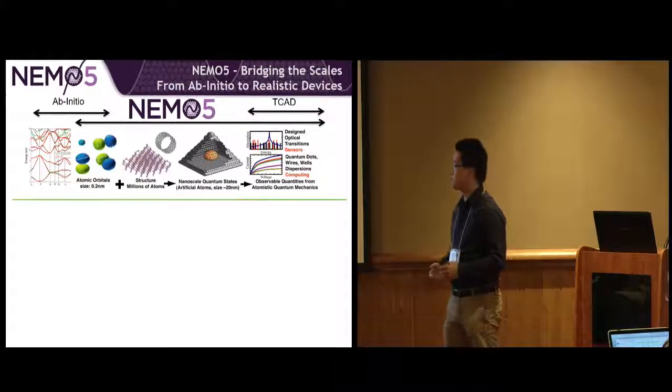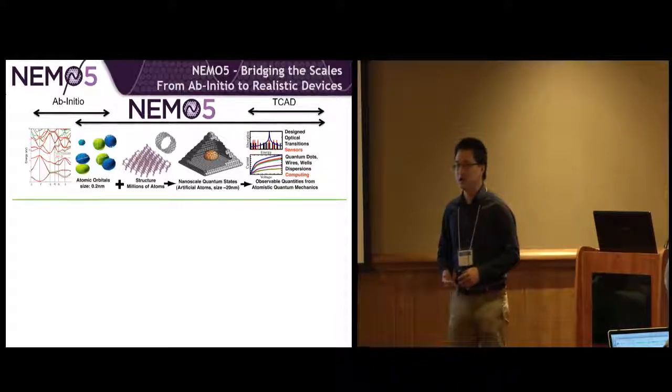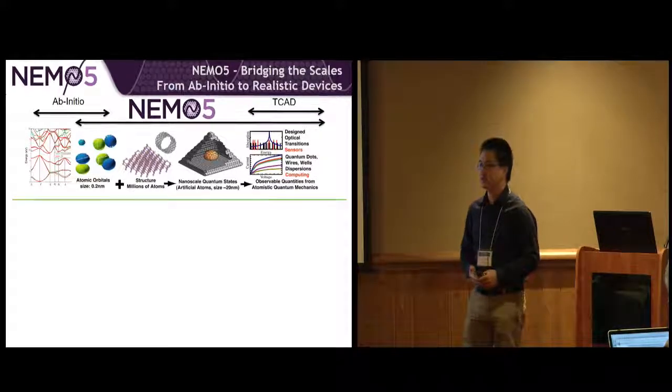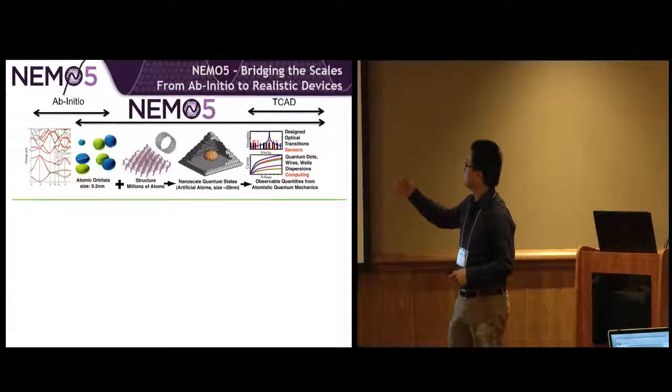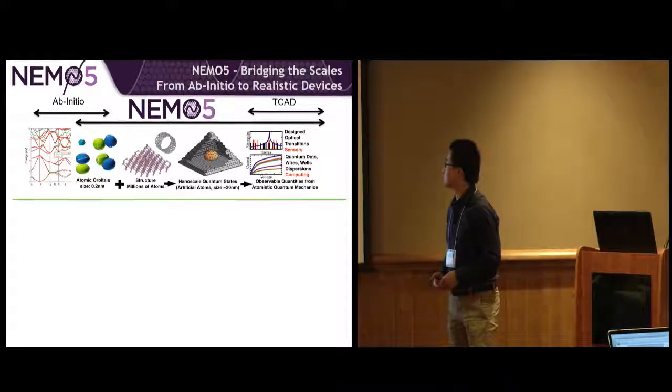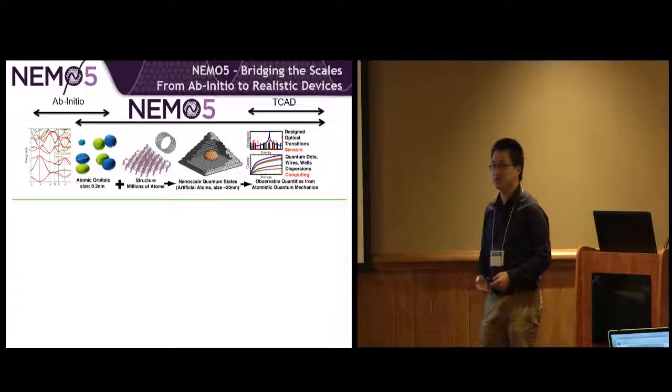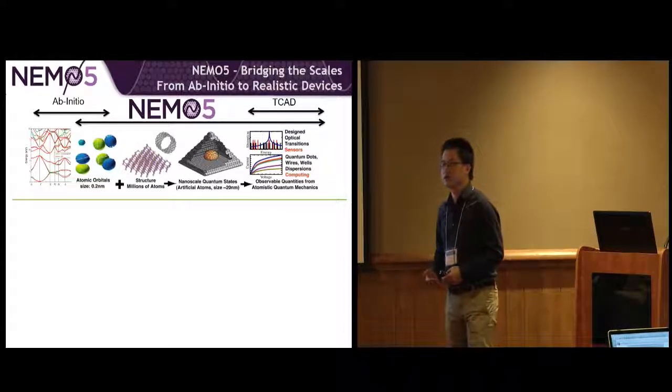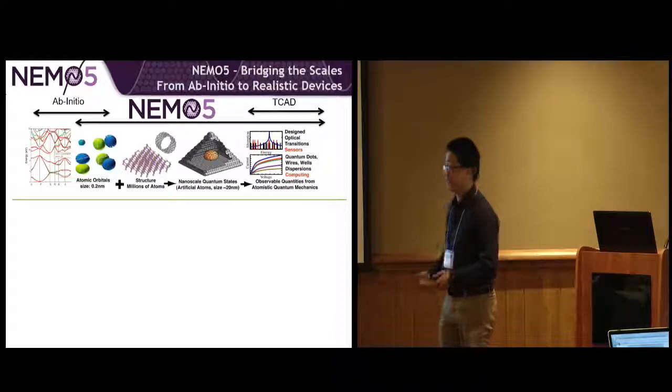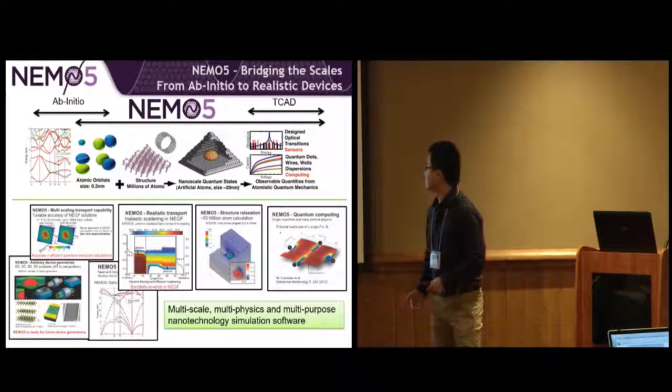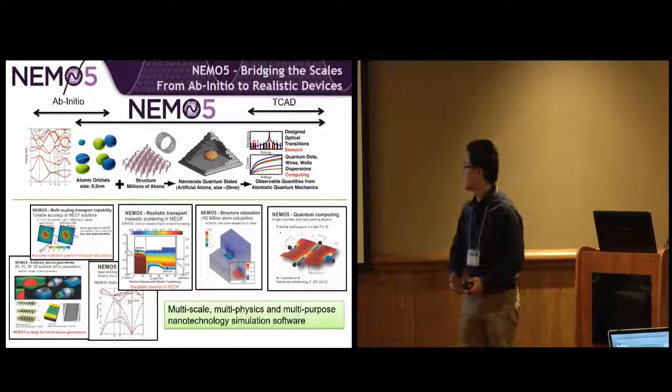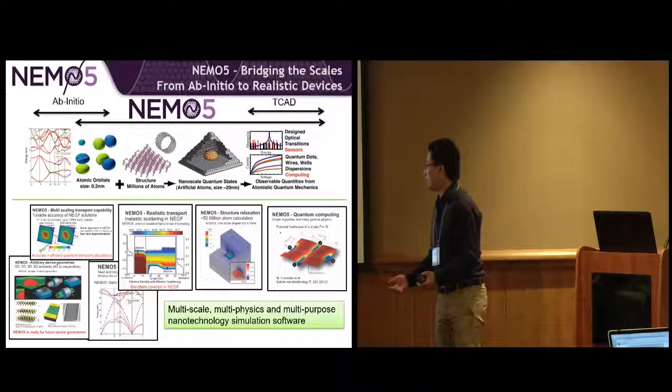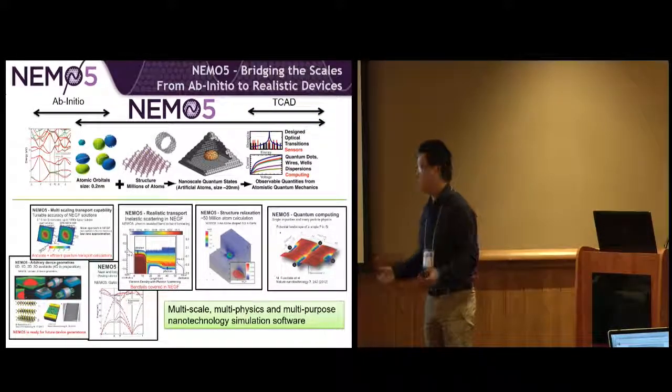NEMO5 actually bridges the ab initio simulation all the way to realistic device simulations. We map the parameters from ab initio to the parameters in NEMO5 and use that as a building block to simulate realistic devices like transistors. In addition to transistors, NEMO5 can do a lot of different simulations: quantum dots, nanowires, LED devices, and many other devices.